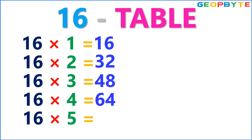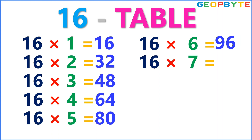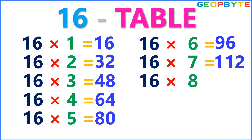16 fives are 80. 16 sixes are 96. 16 sevens are 112.